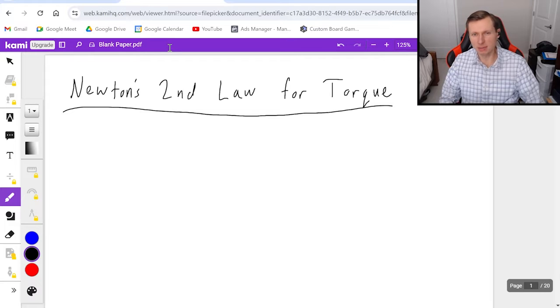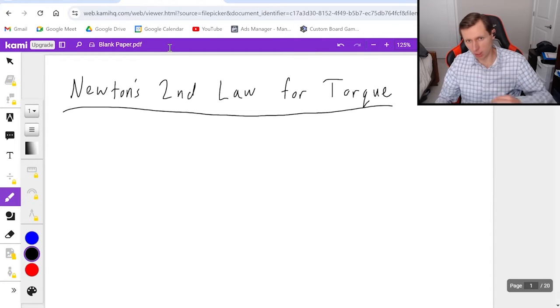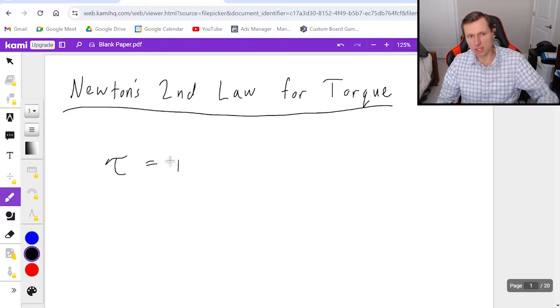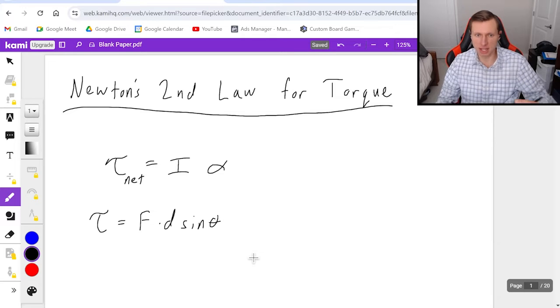Hello everyone, how's it going? My name is Dan the Tudor. In today's video, we're going to be looking at some problems that use Newton's second law for torque. I'm talking about this equation right here, torque equals I times alpha. Technically, that's supposed to be net torque, and torque even has its own equation. Of course, torque equals force times distance, and then sine theta if it's at an angle.